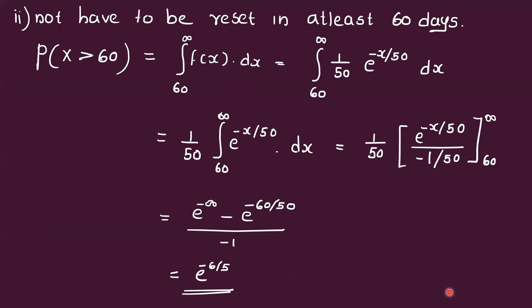For part two, P(X ≥ 60) is the integral from 60 to infinity of f(x) dx. With f(x) = (1/50) * e^(-x/50), this becomes the integral from 60 to infinity of (1/50) * e^(-x/50) dx. Integrating gives e^(-x/50) divided by (-1/50), and the 1/50 cancels.